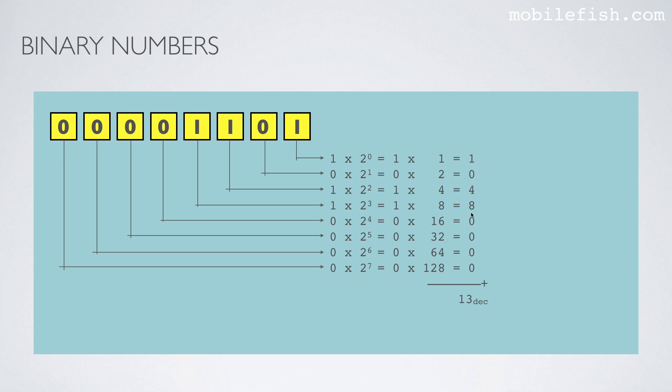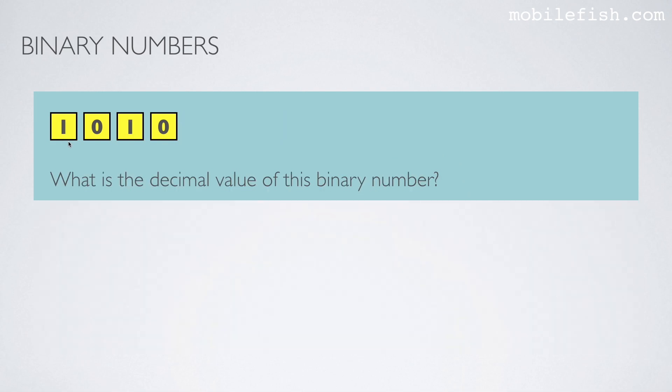After you have done all the multiplication, you add these values up and it is in total 13. So this binary number is the same as 13 decimal. So what is the decimal value of this binary number consisting of 4 bits? The answer is 10. If you want to know how it is calculated, just do the same calculation what we have done previously.